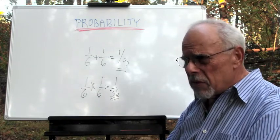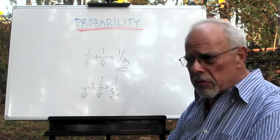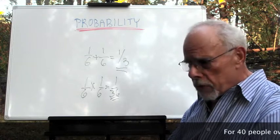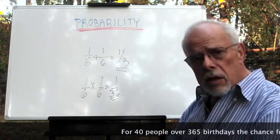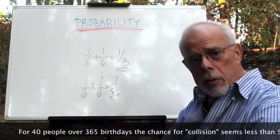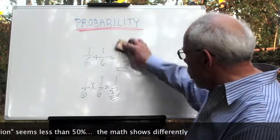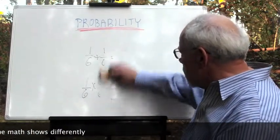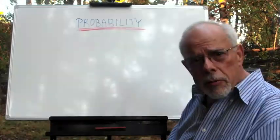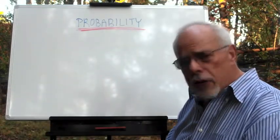Intuitively, most people would say, oh, that's very poor, like ten percent, five percent. Because, after all, there are three hundred sixty-five days in the year, and there are only forty people. If you do the math, you do the calculation, you find out that it's much more than fifty percent. And it's not difficult to calculate.